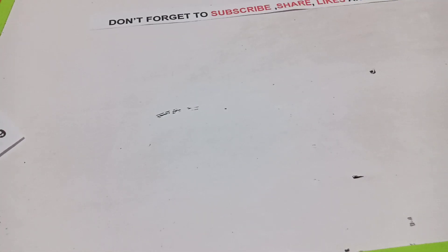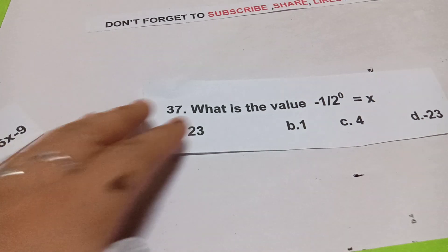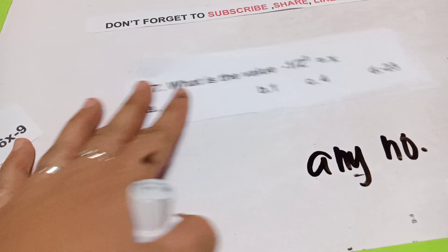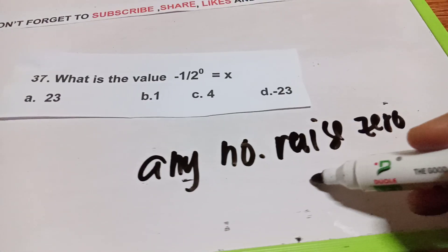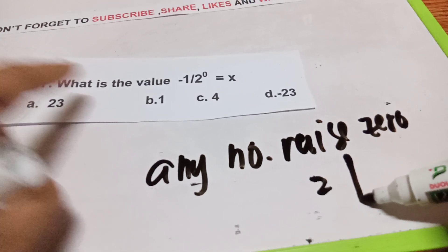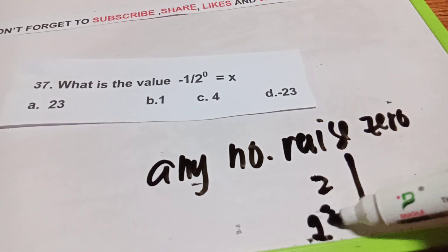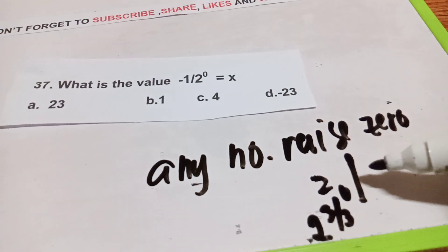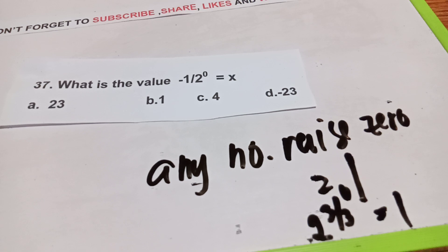Question number 37: what is the value of x if (−1/2)⁰ = x? The rule for exponents states that any number raised to the power of 0 is equal to 1. So (−1/2)⁰ = 1. For example, 2³⁰ = 1 as well. Any number raised to 0 equals 1. The answer is letter B.